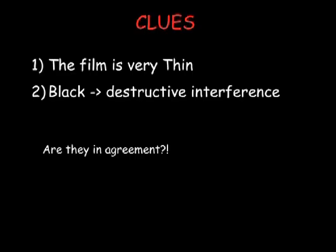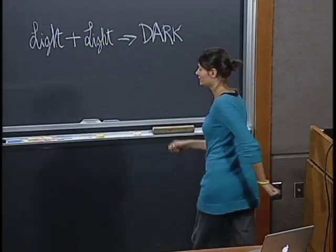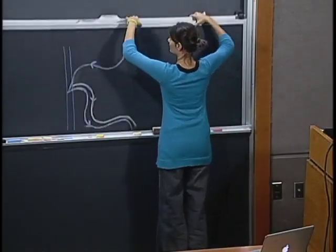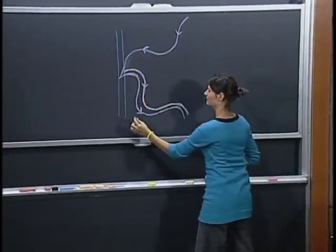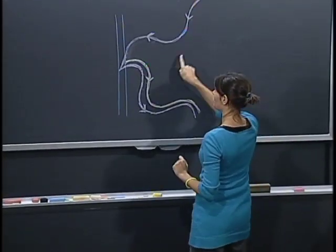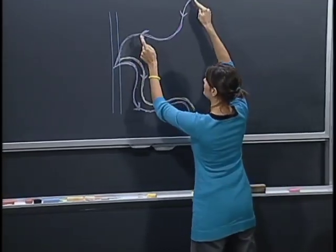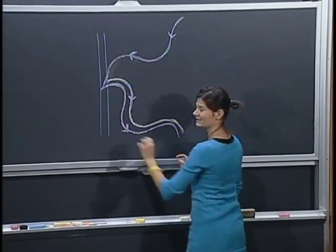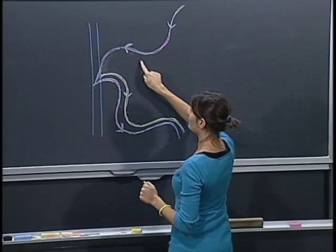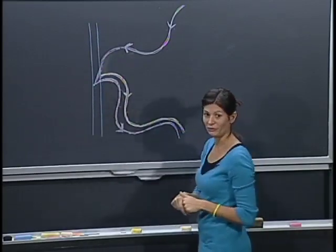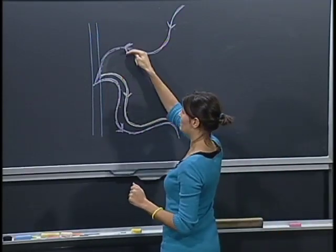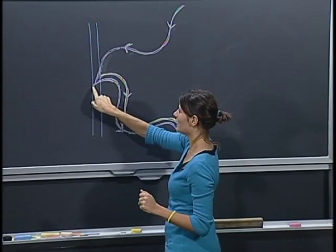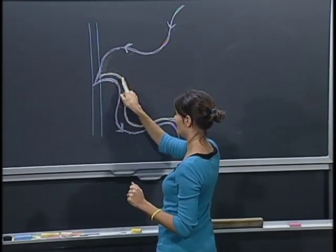Are these two clues really in agreement? Let's try to find it out. Here we have the thin soap film - it is very thin - and an incoming wave. The wavelength is much larger than the thickness of the film itself. When the wave is hitting the soap film, part of it is reflected on the first surface, while part of it goes through the water and the soap and gets reflected on the second soapy surface.